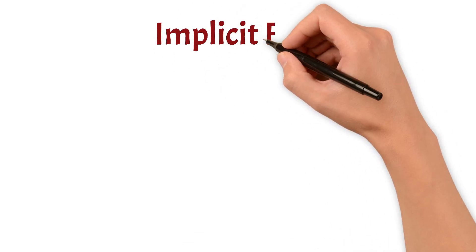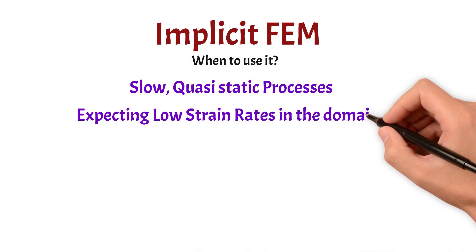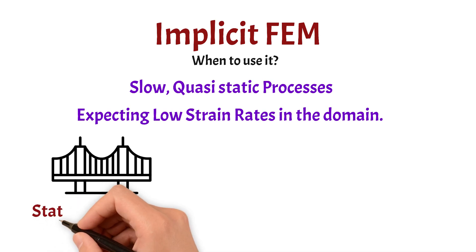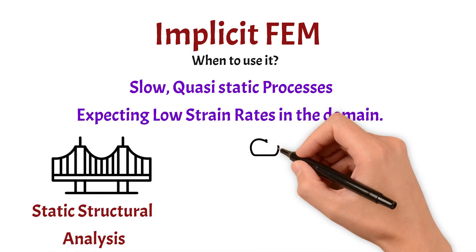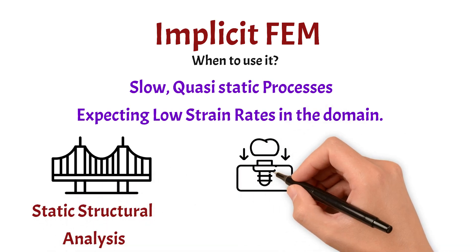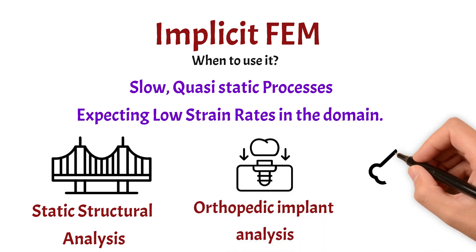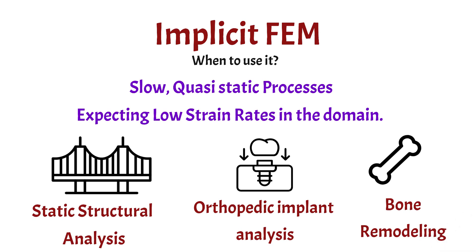In contrast, implicit solvers are generally used when we have to simulate slow and quasi-static processes where we are expecting low strain rates in the domain. For example, if you are interested in doing a static structural analysis, or biomechanics of an orthopedic implant or a bone, that's where implicit finite element solvers are generally used.